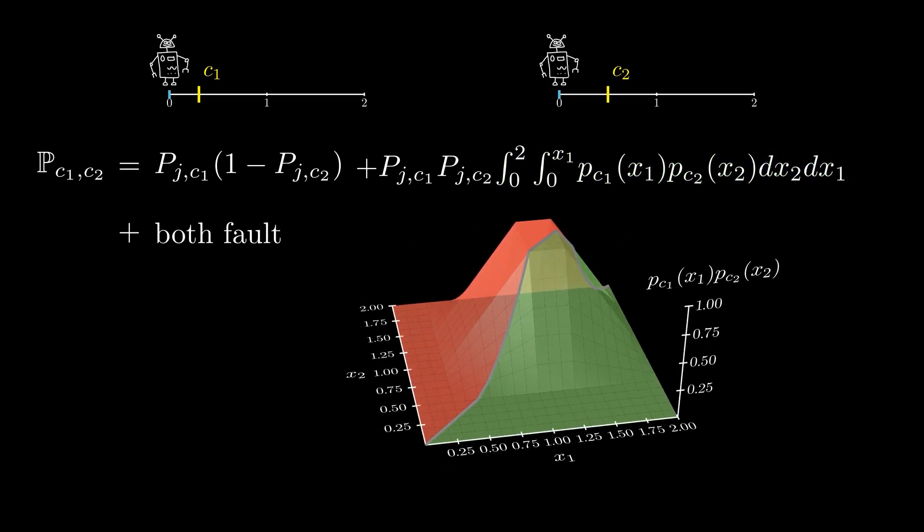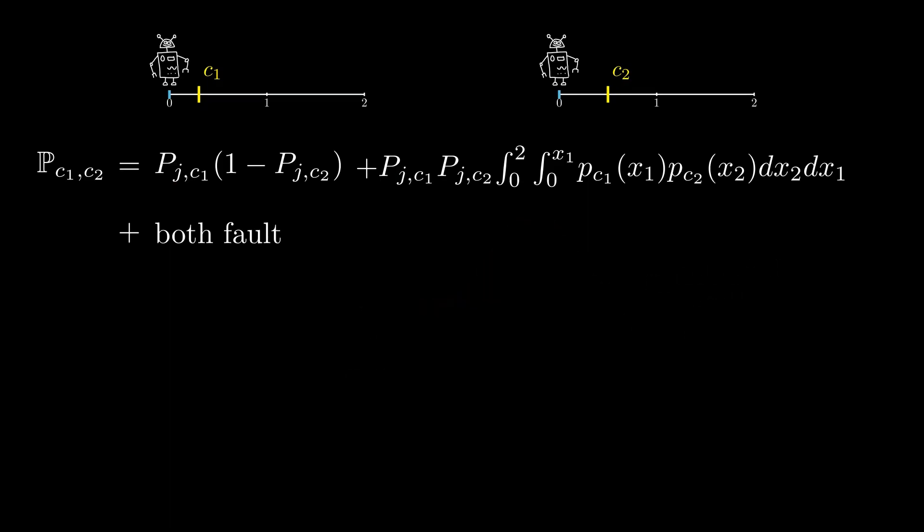Finally, if both robots fault, then the probability is given by neither of them jumping times the original probability that they win. After all, the probability of winning at the beginning is the same as the probability of winning after they both fault, since they are still running the same strategies and starting at zero in both cases.